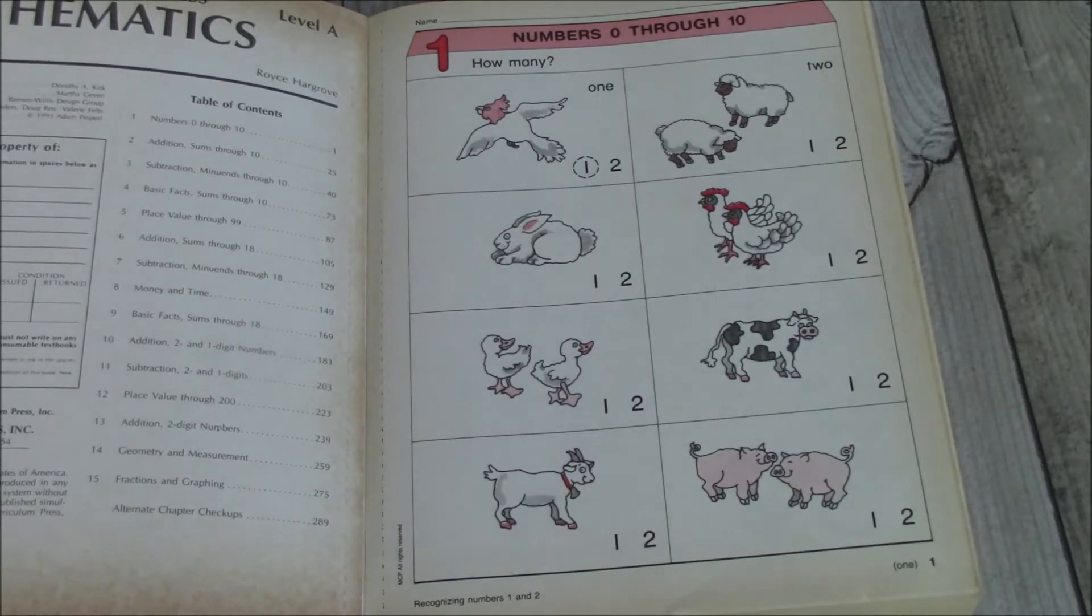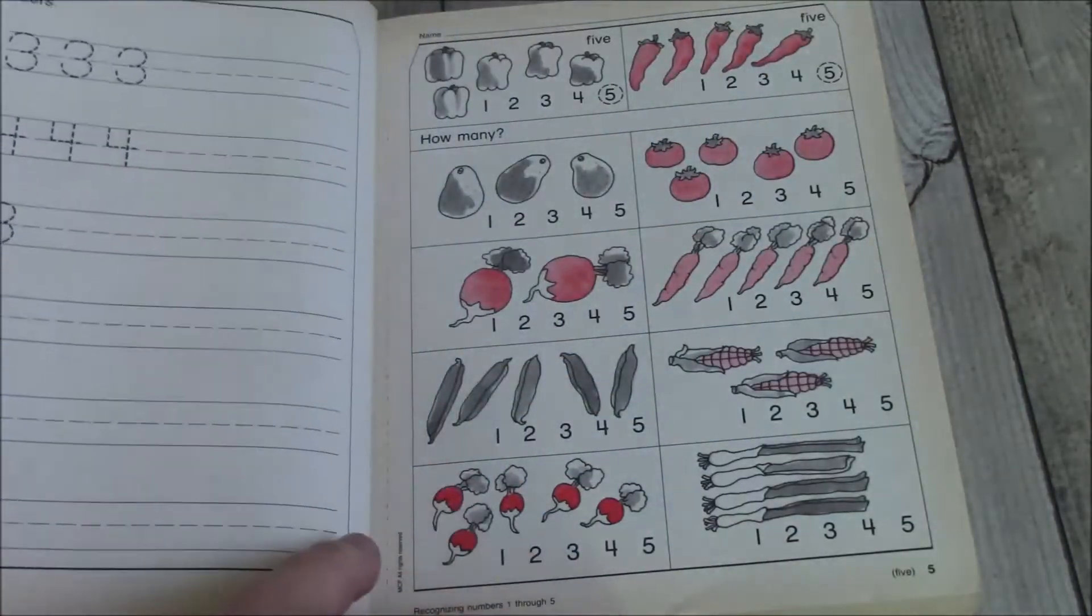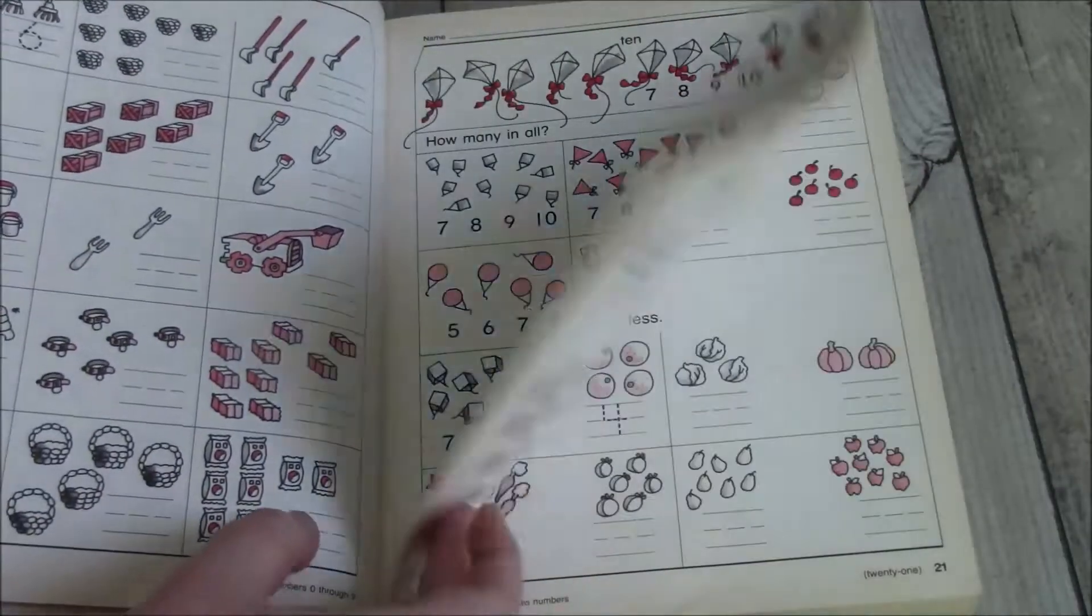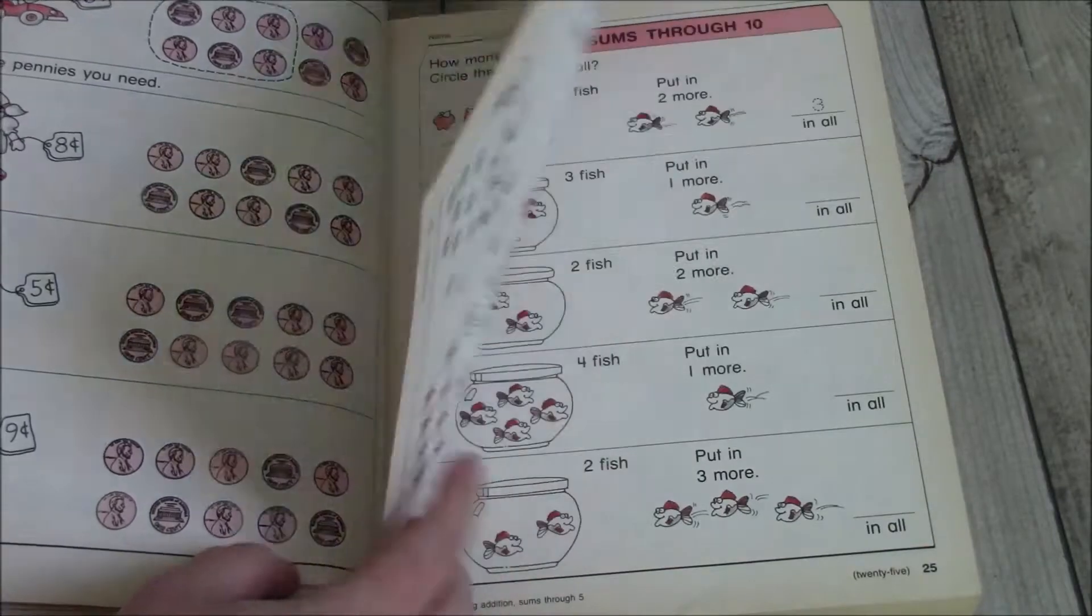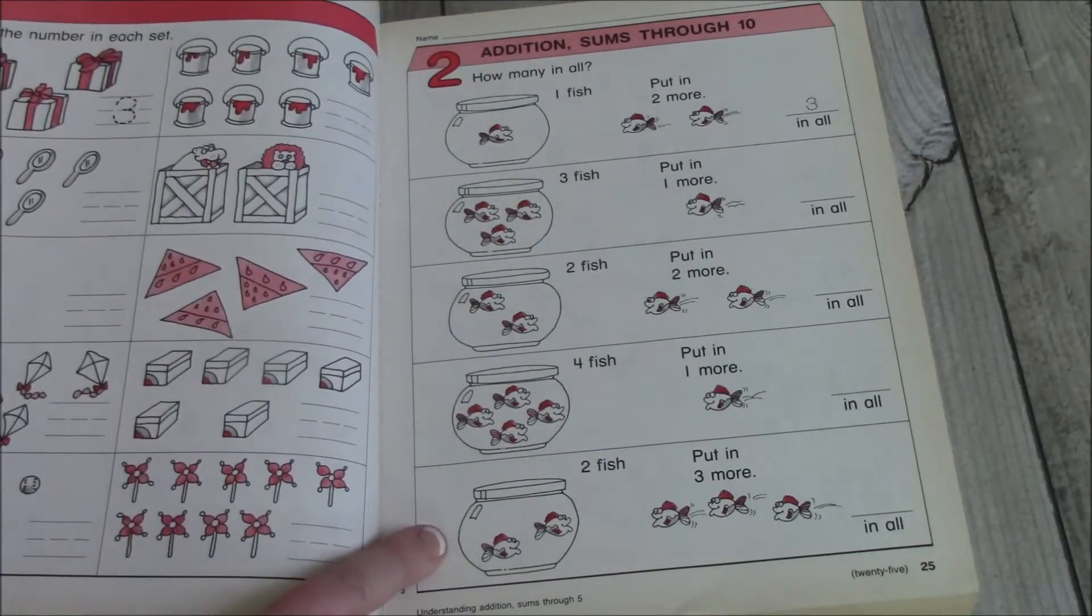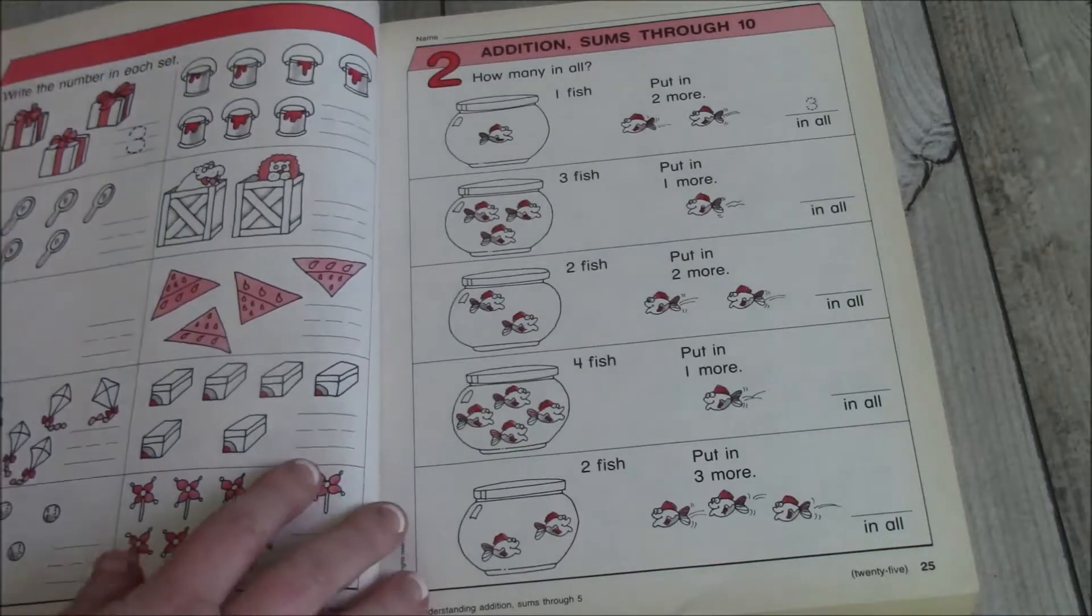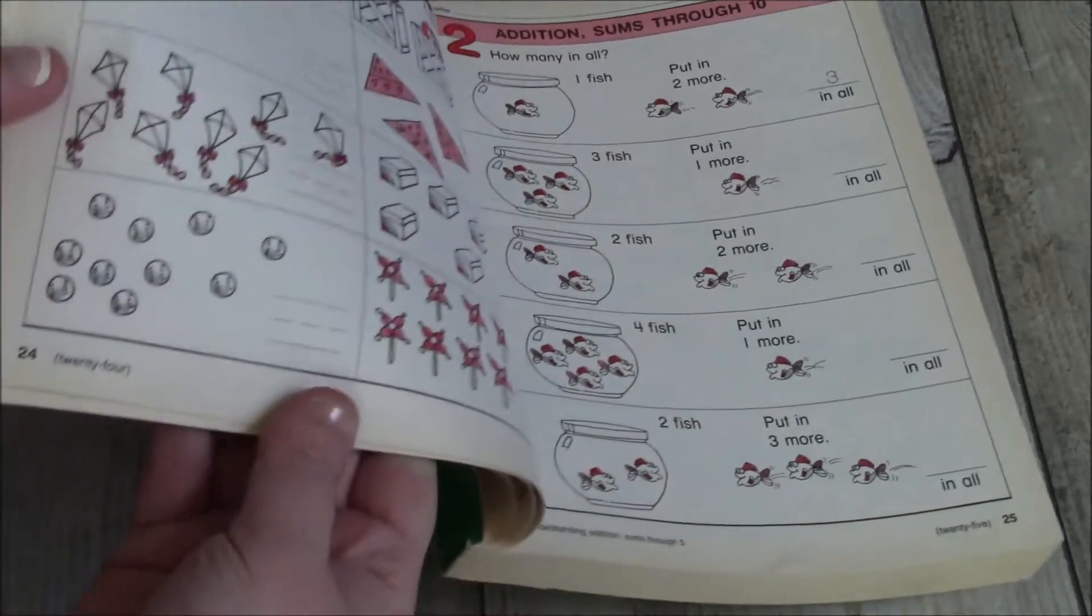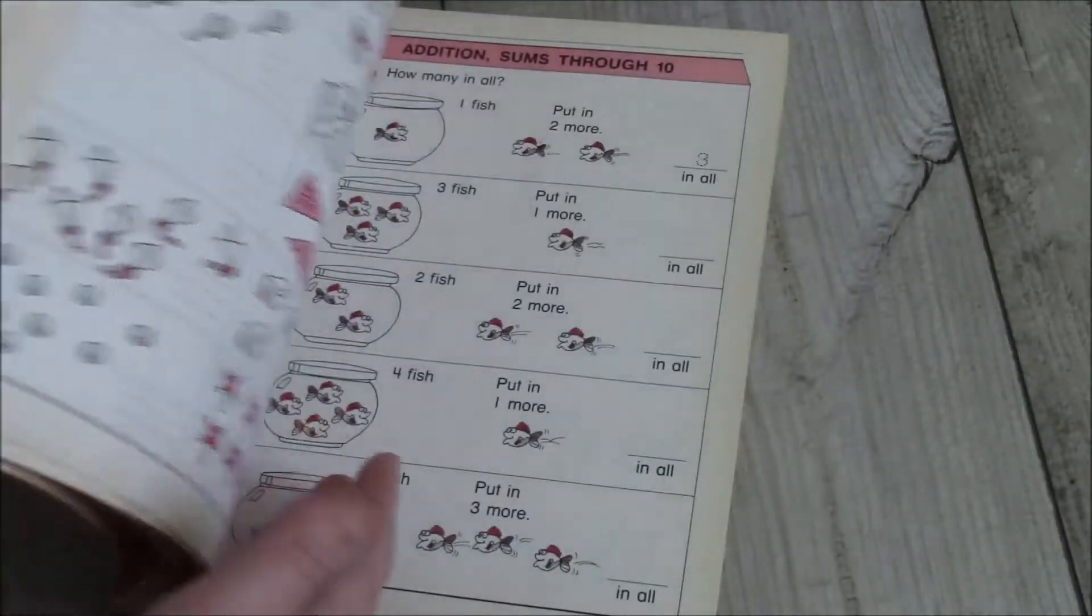So when my daughter started this, she was six. And a lot of these we could just skip. So what I did was I just removed these pages and I used them as busy work pages for my younger boy. And about chapter two is when we kind of started her at. So that is the first 24 pages that we have taken out.